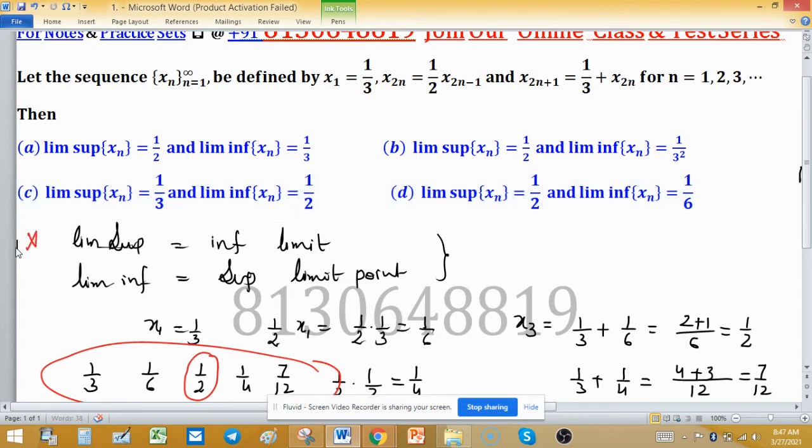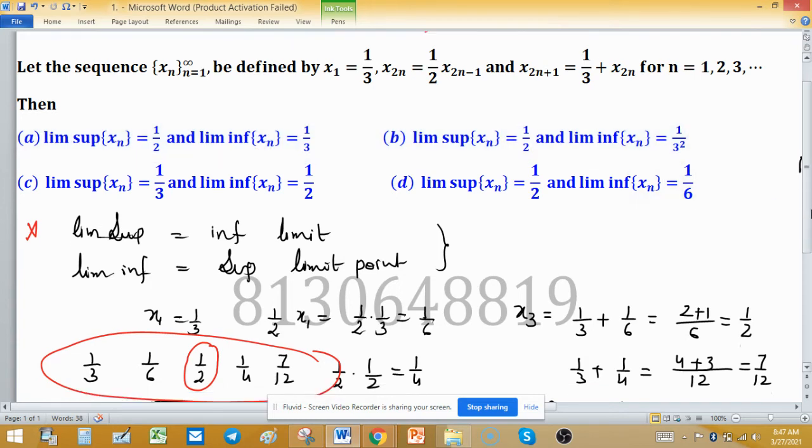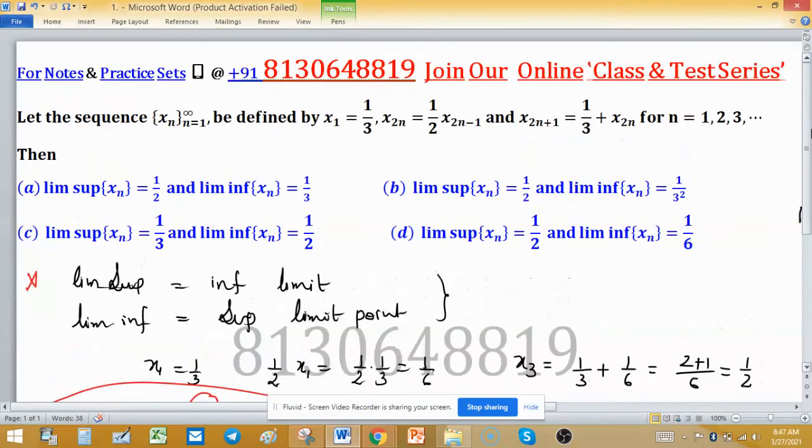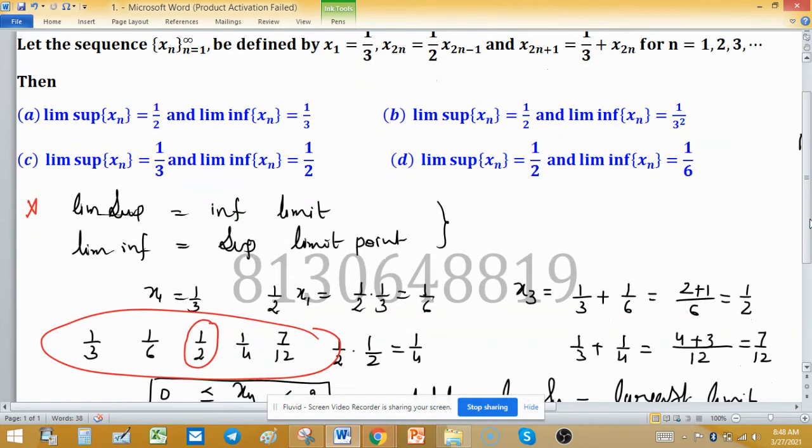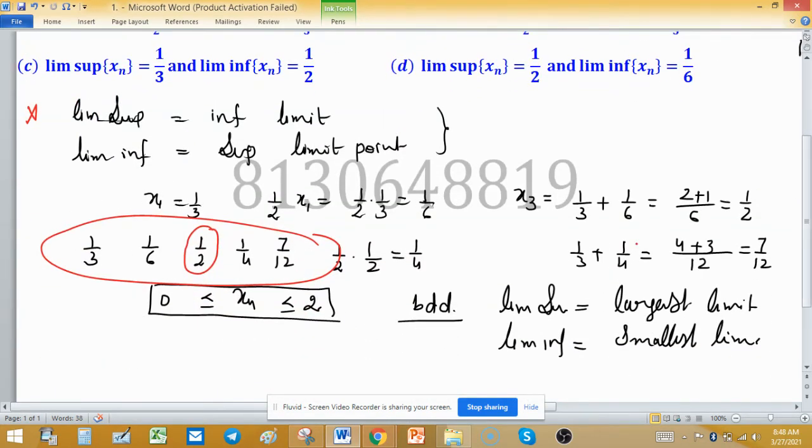Option C discard here. Now, we have 3 possibilities: option A, B and D. Means, if anyhow, if we get the idea about limit inferior, then we are done. So, limit inferior, few possibilities are 1 upon 3, 1 upon 3 squared, and 1 upon 6.